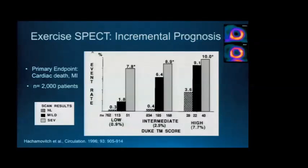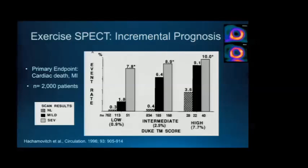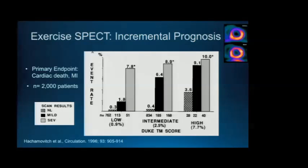Functional imaging can provide incremental prognostic benefit over and above the stress ECG. A paper of 2,000 patients who underwent both stress ECG and stress SPECT showed that patients divided by Duke Treadmill Score into low, intermediate, or high risk can be further stratified by the degree of abnormality on stress SPECT for the risk of cardiac death or MI — with a normal scan in hash marks, mild ischemia in black, and severe ischemia in solid gray.